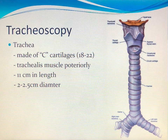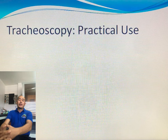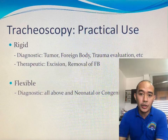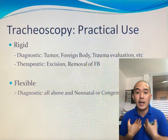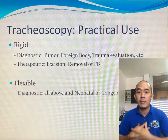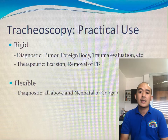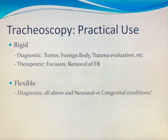The trachea is approximately 11 cm in length and 2 to 2.5 cm in diameter in an adult. Younger patients have smaller, narrower, and shorter tracheas. We perform tracheoscopy for several purposes. Rigid tracheoscopy can be diagnostic for tumors, foreign body, or evaluation of trauma — penetrating or blunt cervical and thoracic trauma — and therapeutic for excision biopsy, mass removal, or foreign body removal. Flexible tracheoscopy, though doable in the OPD, has limited practical use, especially since foreign body extraction is best done rigidly.